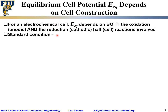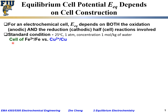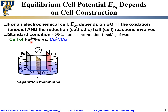Under standard conditions, which typically means 25°C, one atmosphere pressure, and species such as iron at a standard concentration of one molar per kilogram of solvent — normally water — a molality of one, let's look at a cell of Fe²⁺/Fe versus Cu²⁺/Cu.